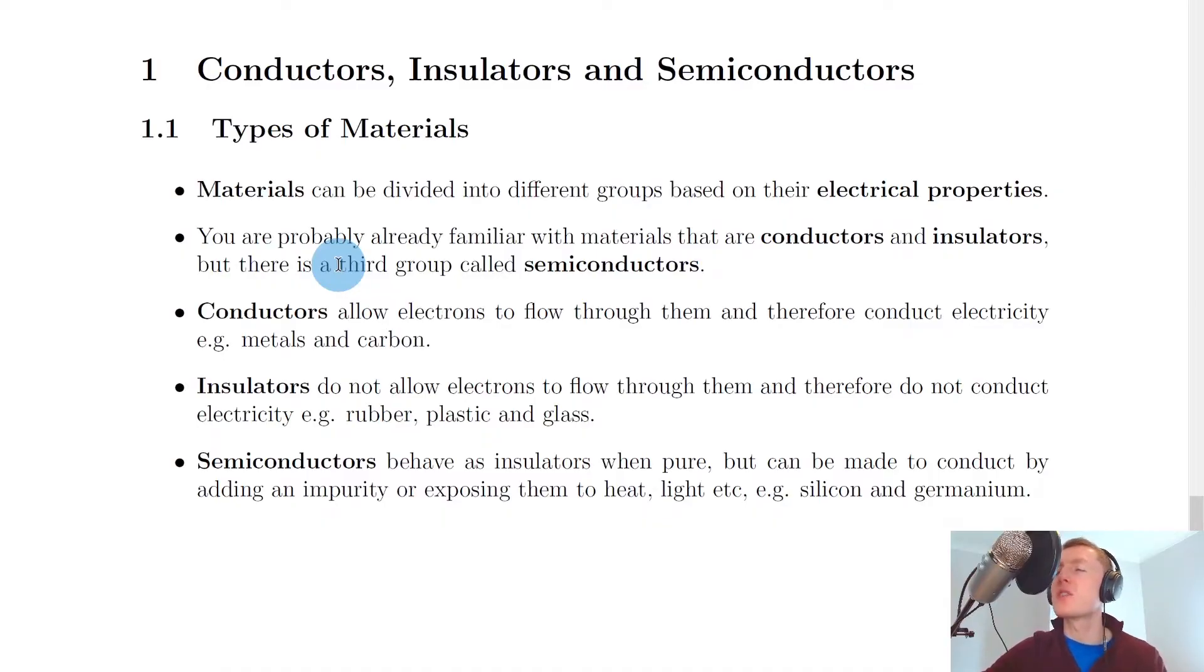Now to start off the topic on semiconductors and PN junctions, it's worth looking at the different types of materials that exist. So first of all, it says that materials can be divided into different groups based on their electrical properties. You're probably already familiar with materials that are conductors and insulators, but there is a third group called semiconductors.